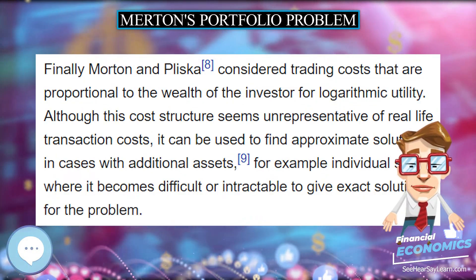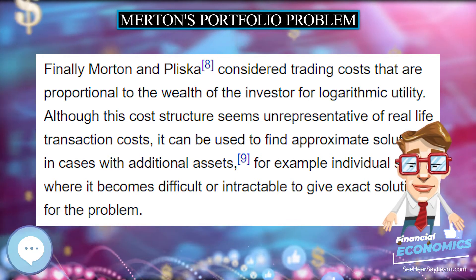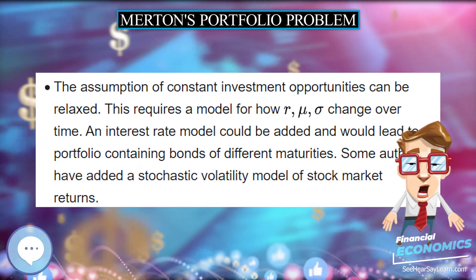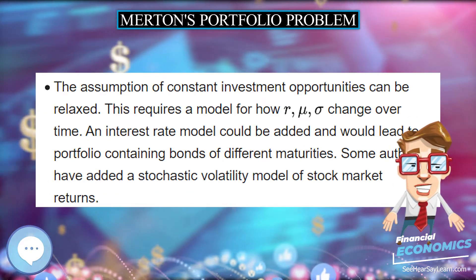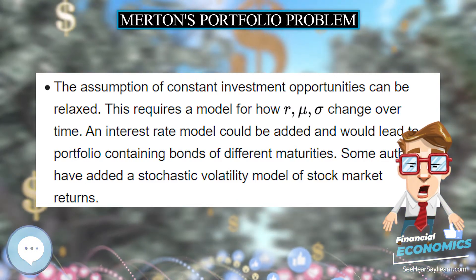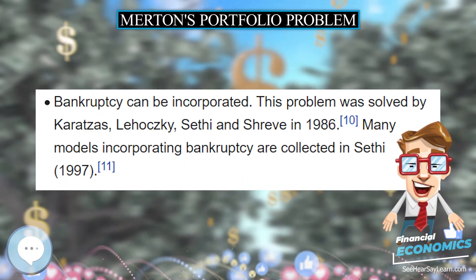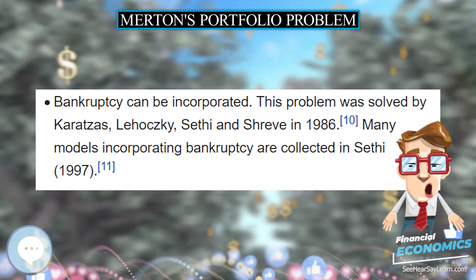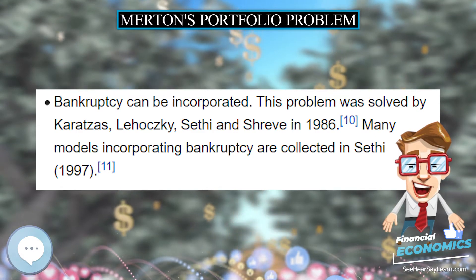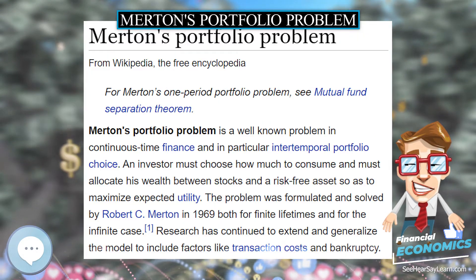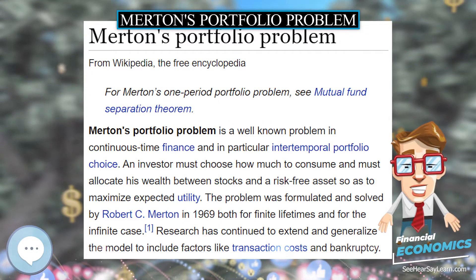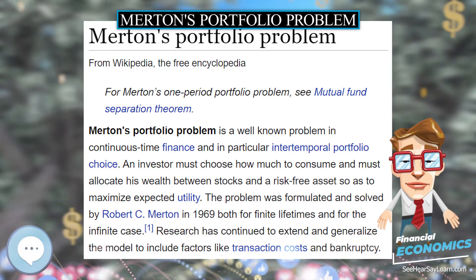The objective is where E is the expectation operator, u is a known utility function which applies both to consumption and to the terminal wealth, or bequest, W(T). Epsilon parameterizes the desired level of bequest, and rho is the subjective discount rate.